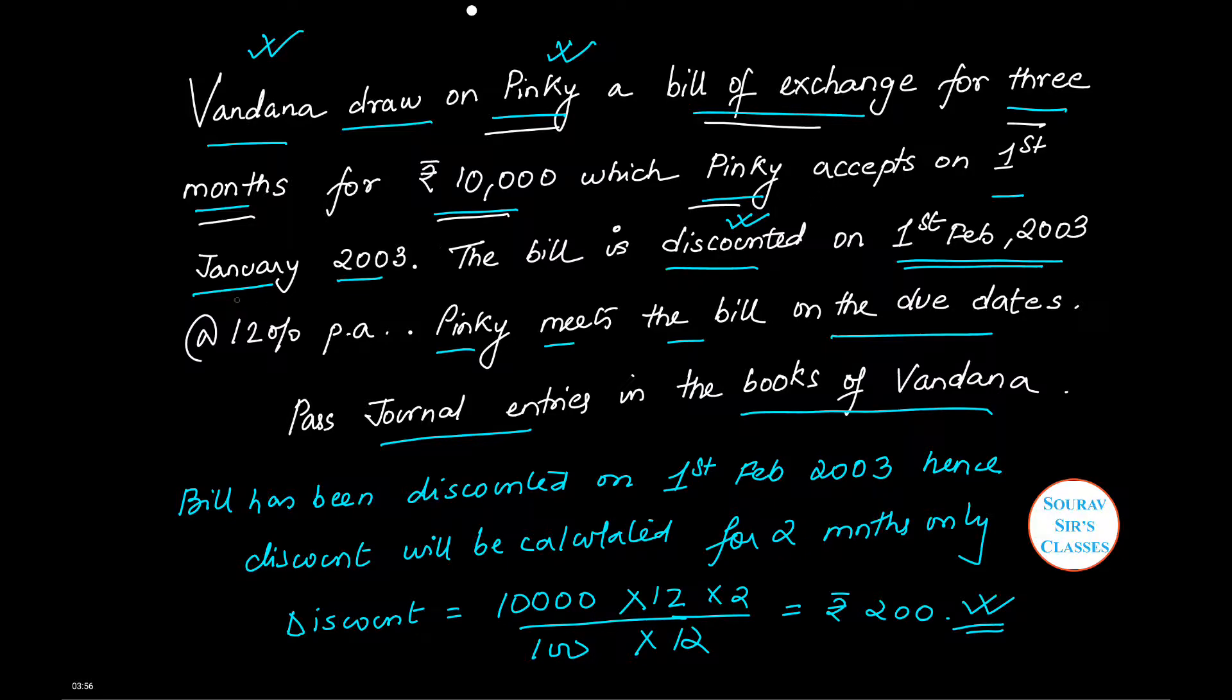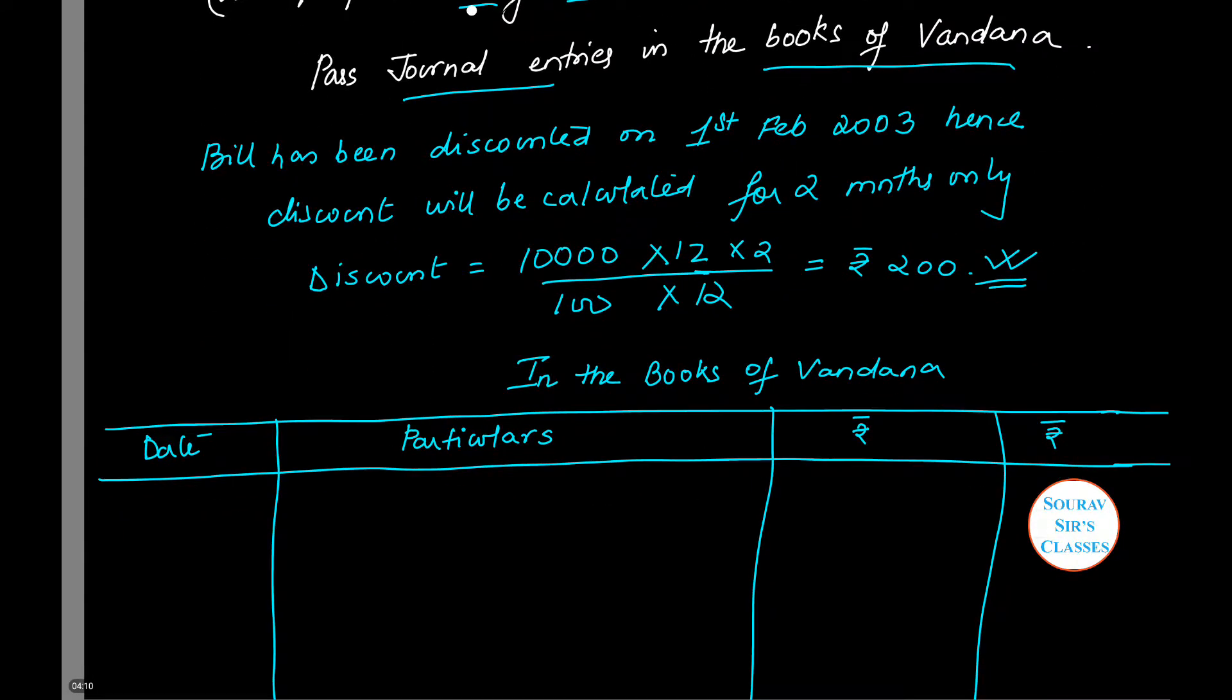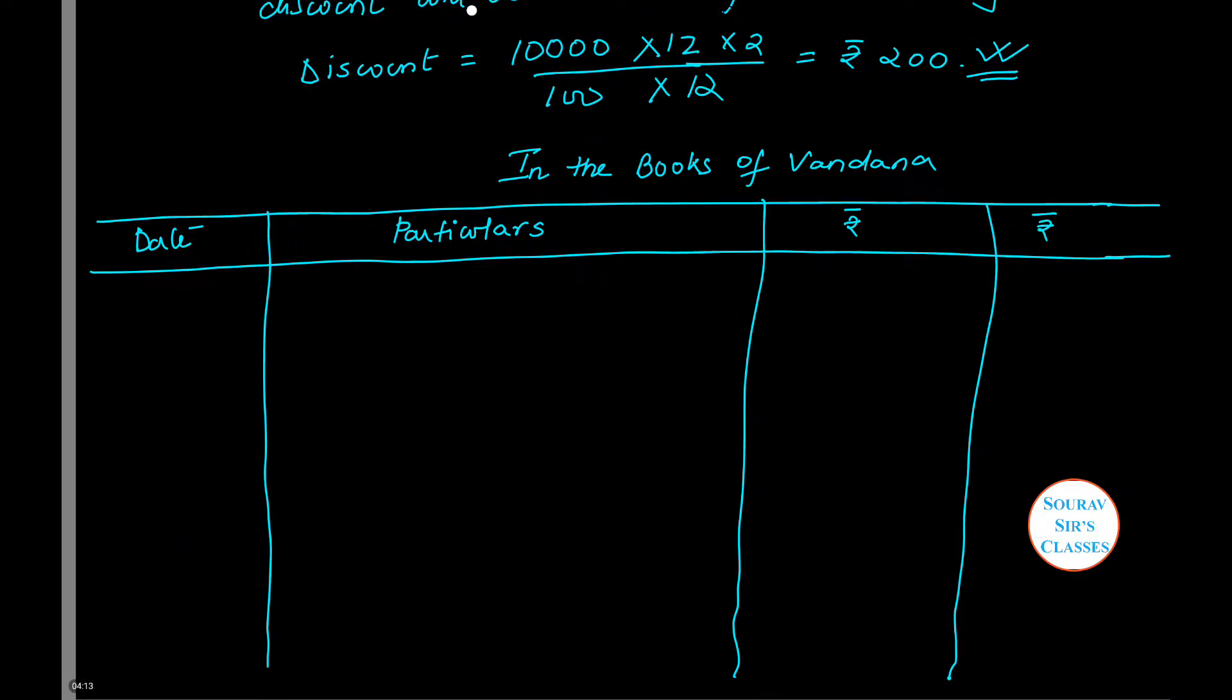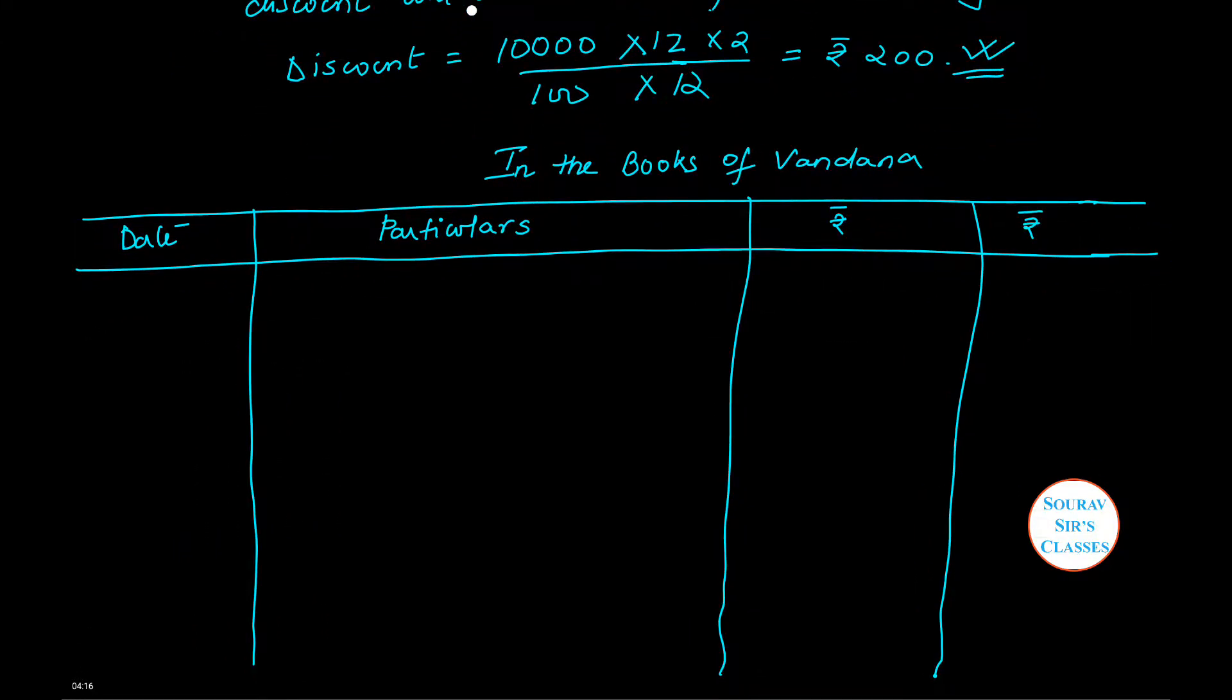The first part is Vandana draws on Pinky a bill of exchange for three months for ₹10,000, which Pinky accepts on 1st January 2003. So the first transaction journal entry will be with respect to this date, 1st January 2003. The two accounts being affected will be Bills Receivable and Pinky account. The entry will be Bills Receivable account debit to Pinky, and the amount is ₹10,000.